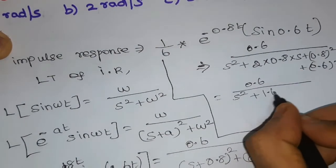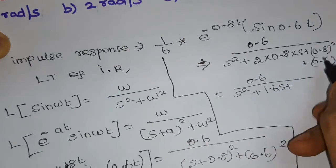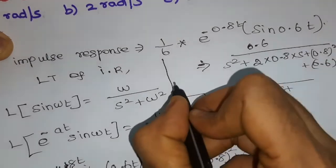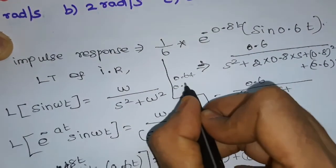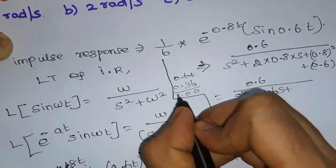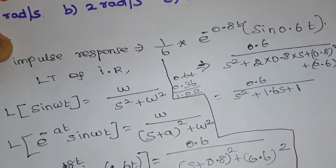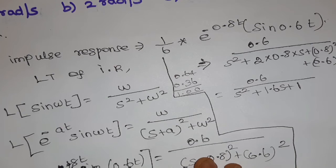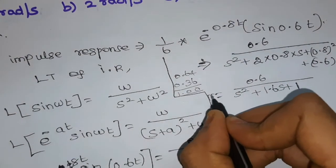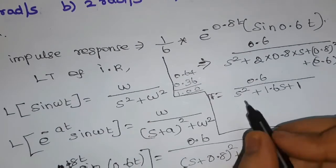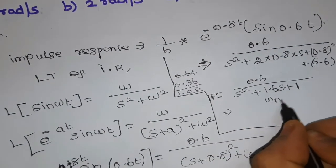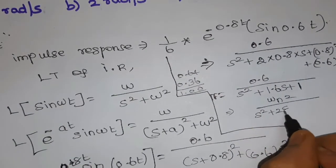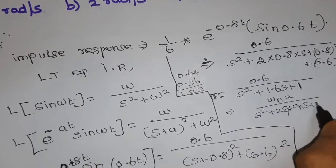Simplifying: (0.6)² plus (0.8)² equals 0.36 plus 0.64, which equals 1. By comparing this transfer function to the standard second-order form — omega-n squared divided by s squared plus 2·zeta·omega-n·s plus omega-n squared — we can identify the system parameters.